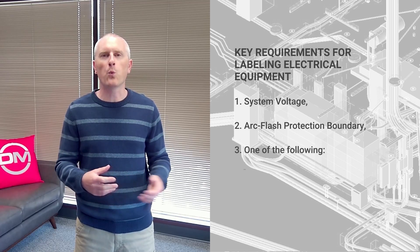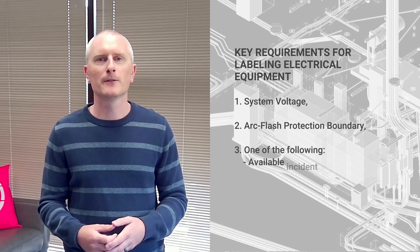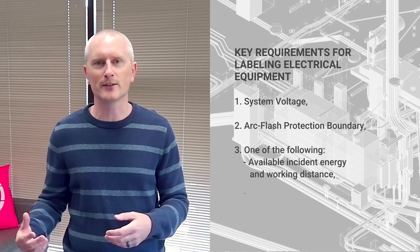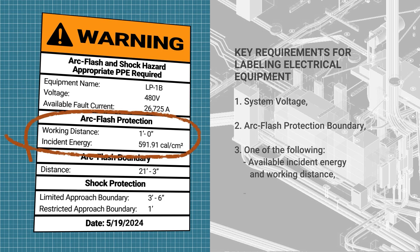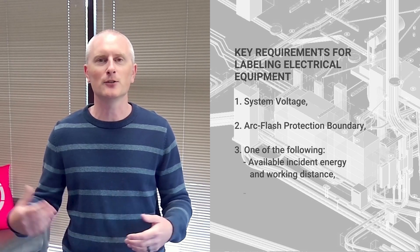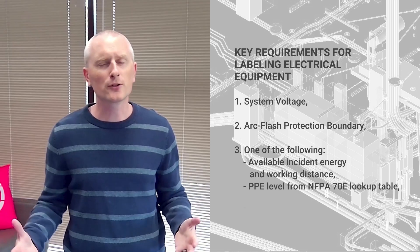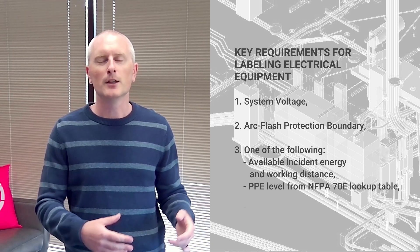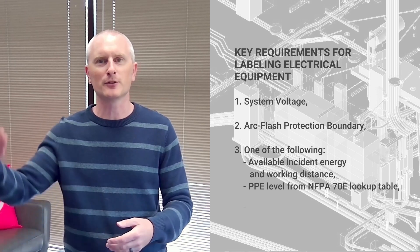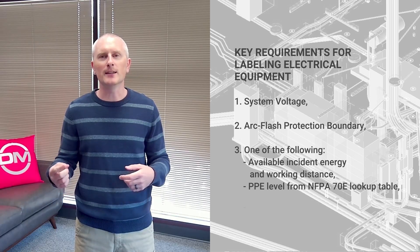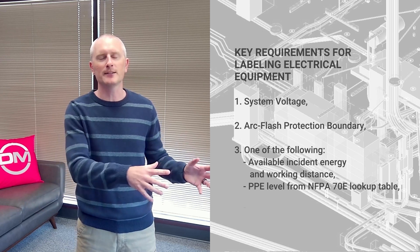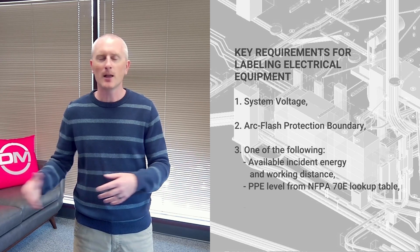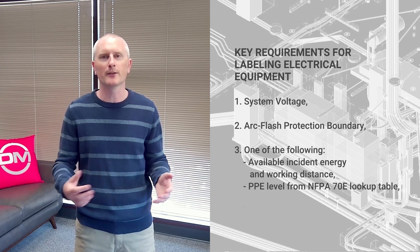Then there's the third thing, which is one of three options you need to include. The first option is the available incident energy and working distance — this is what our software and most other software do, performing the full IEEE calculation to give you the arc flash energy at a certain working distance. Alternatively, there are rule-of-thumb lookup tables in NFPA 70E where you can look up your piece of equipment and include a PPE level. It's important to note that you include one or the other — either the calculated values or the PPE from the lookup table — but not both.